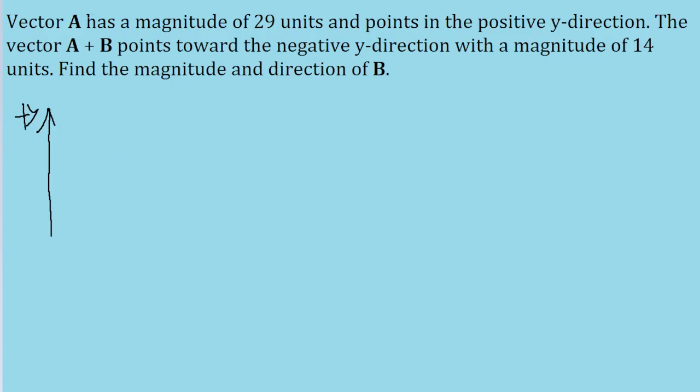The problem says that vector A has a magnitude of 29 units in the positive y direction, and that the total vector A plus B points toward the negative y direction with a magnitude of negative 14 units. It goes all the way down here. We're looking for the magnitude and direction of B.